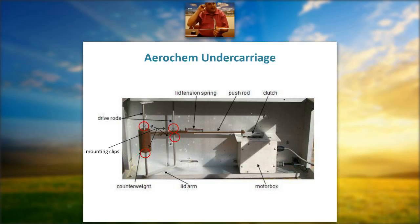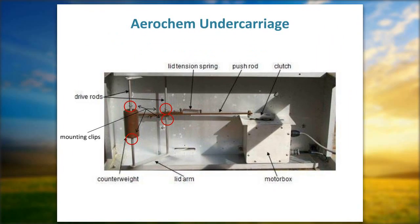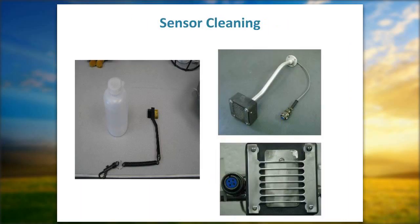For lubrication, do not use WD-40 — it lubricates but attracts dirt, grease, and grime, causing buildup over time. We recommend GumOut, which is a no-residue spray. Also, even if your sensor looks clean, over four or five months of sun, dust, wind, rain, and snow you can get a non-visual residue film on top of the sensor grid that reduces sensitivity. Clean it thoroughly with the bristle side of your brush — you may be surprised how much the sensitivity improves.